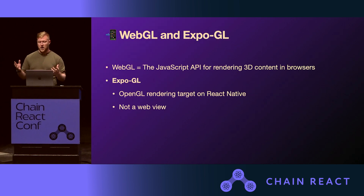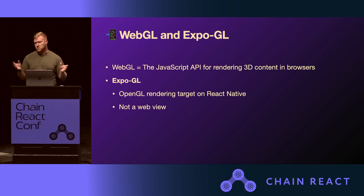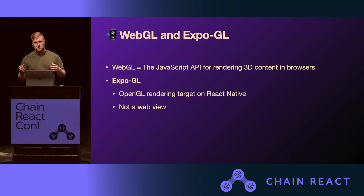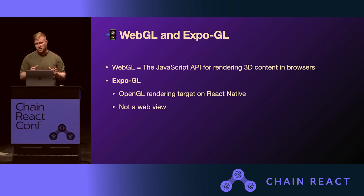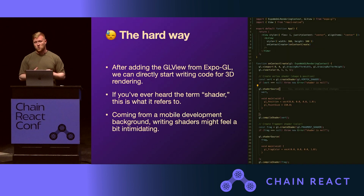To give a bit of context on what WebGL and Expo GL are and their differences: Noise uses WebGL under the hood to show all the 3D graphic stuff on the web — it's widely available on basically all browsers, works nicely, and is performant. On the native side you have Expo GL, which doesn't really have anything to do with WebGL; rather, it's an OpenGL rendering target for React Native. In addition to that, it makes it possible to use React Three Fiber and Three.js — and it's not a WebView but a native layer, which is much better for this situation.